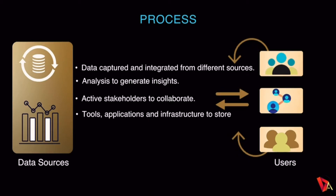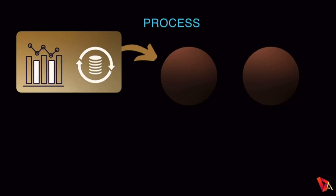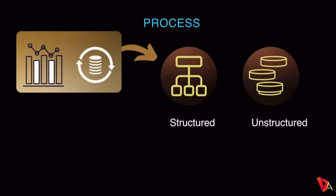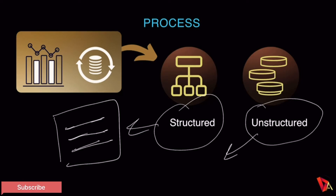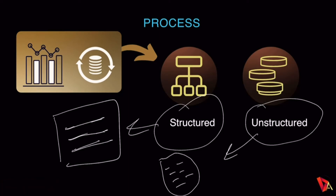All the data is interconnected and accessible to users, who can collect the data on a regular basis. The data source is converted into two different categories: first is structured and second is unstructured. Structured data is where there are no gaps — it is uniform data. On the other hand, unstructured data has gaps which can be filled and converted into a usable form.